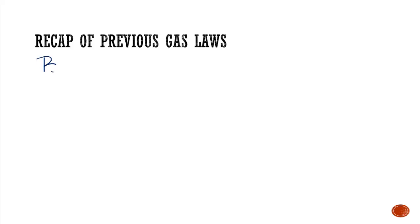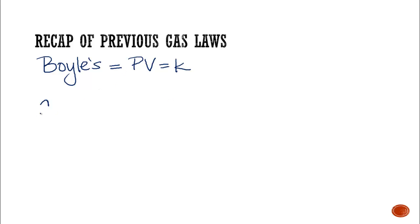So we have Boyle's Law, and Boyle's Law gave us PV equals K. Then we had Charles' Law, and that equaled V over T, and it was also related to a constant K.